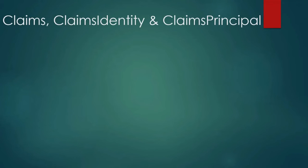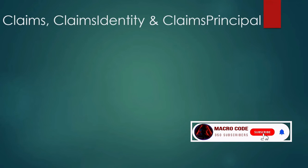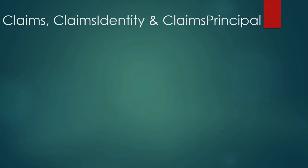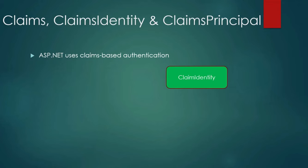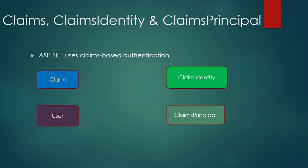To proceed, we need to understand what claims are so that you're able to understand claims-based authorization or claims-based access control. For ASP.NET Core, you must understand these three key terms: claim, claims identity, and claims principal. ASP.NET uses claims-based authentication, so these terms are very important when it comes to claims-based authentication or claims-based access control.